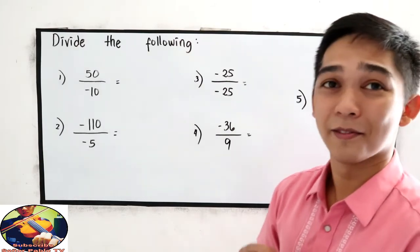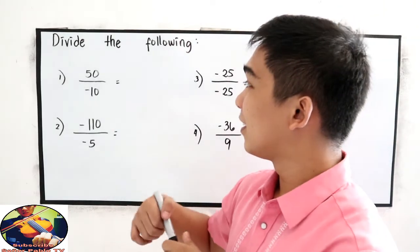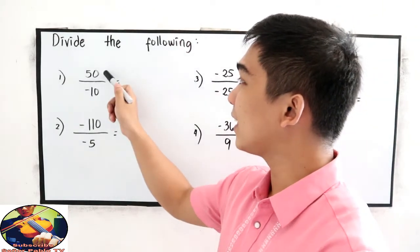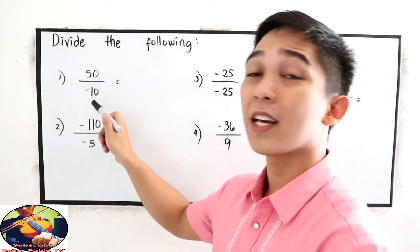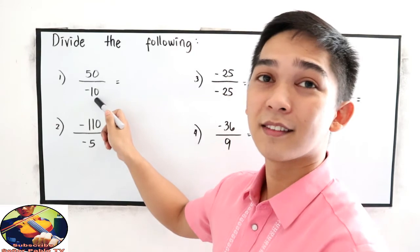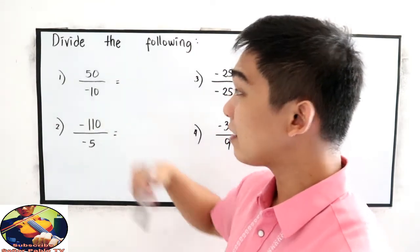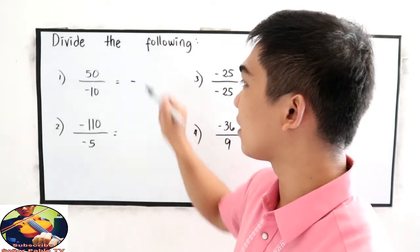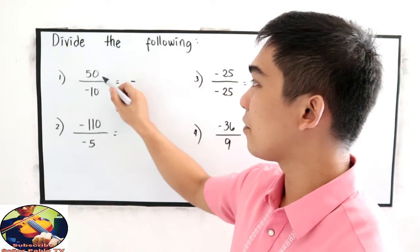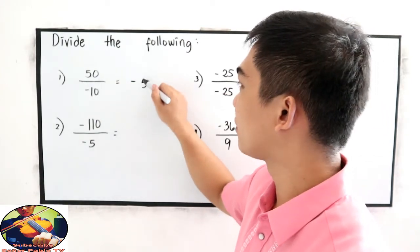Let's try number 1. Positive 50 divided by negative 10. Unlike signs, so the sign is negative. 50 divided by 10 is 5, so the answer is negative 5.